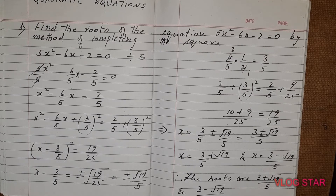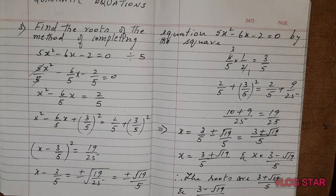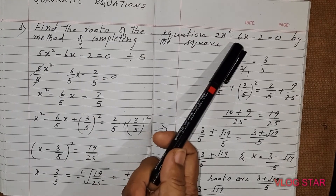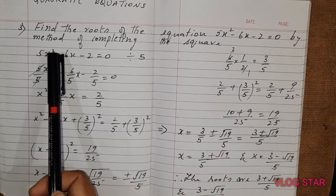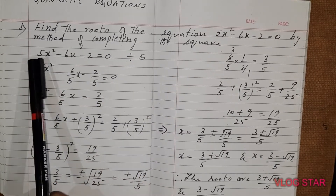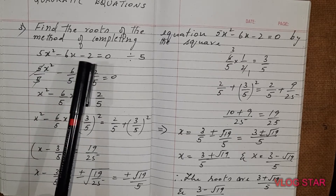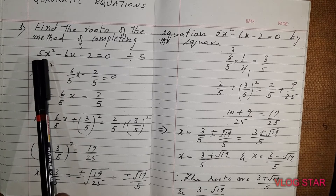Good morning students. Today I am going to take the chapter on quadratic equations. In this, we are going to find the roots of the equation 5x² - 6x - 2 = 0 by the method of completing the square. So the given equation is 5x² - 6x - 2 = 0.